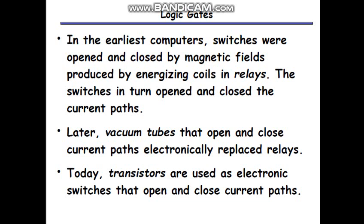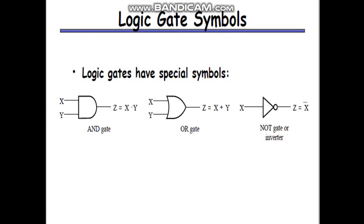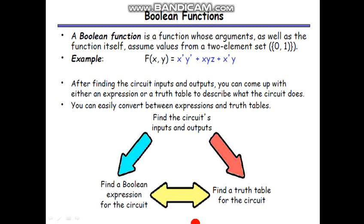In the earliest computers, switches were opened and closed by a magnetic field produced by an energized coil in a relay. Later, vacuum tubes replaced relays by opening and closing current paths electronically. Today, transistors are used as electronic switches. The basic gate symbols are the AND gate, OR gate, and NOT gate, which acts as an inverter.